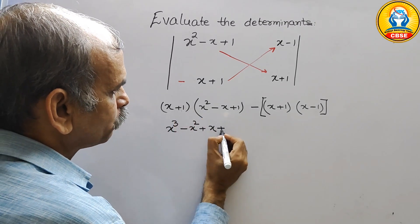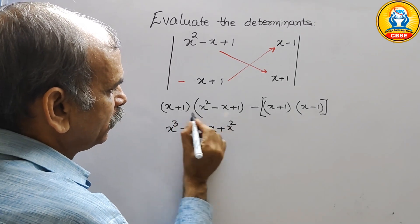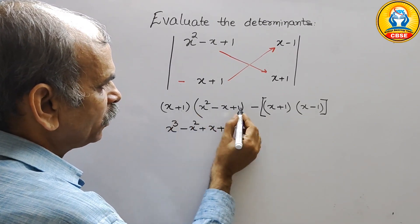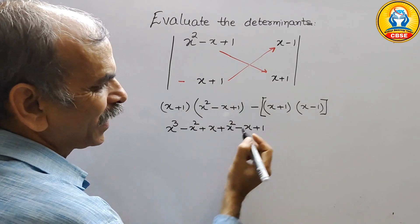1 into x square is plus x square. 1 into minus x is minus x. 1 into 1 is 1.